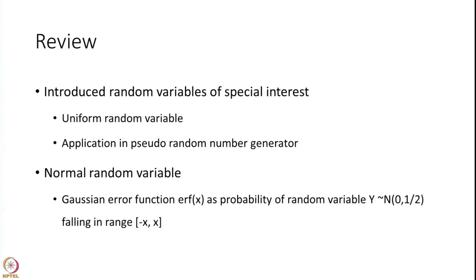Then we introduced the continuous type of special random variables. In the previous session, we introduced the uniform random variable and showed that it is useful for random number generation — it uses a pseudo-random number generator to generate any pseudo-random number from any distribution we wish.